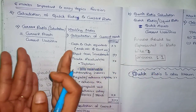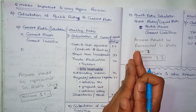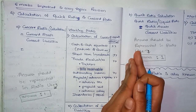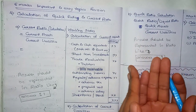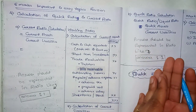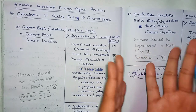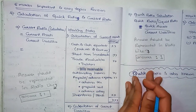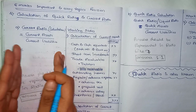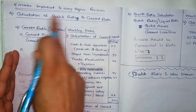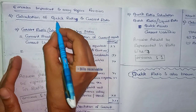That is the liquidity ratio, and one more is the solvency ratio — the debt equity ratio and debt to capital employed ratio. There are about 5 ratios in the solvency ratio. In the liquidity ratio, there are 2 ratios: the quick ratio and current ratio.